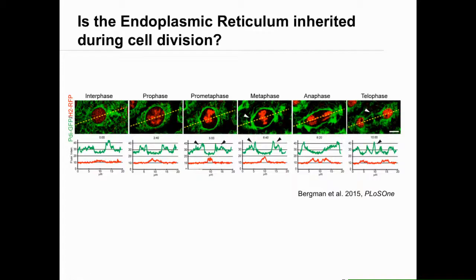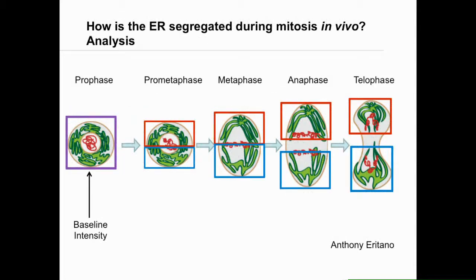To study these inheritance questions, syncytium is not the best place — we wanted to look at an actual cell division. The first cell division is domain one at the 14th mitosis, the first cell division in Drosophila development. So we started looking there, asking a basic question: if we divide the cell in two and measure fluorescence intensity along the metaphase plate at either end, are we getting equal separation of the ER? Can we set this as a baseline for future studies?